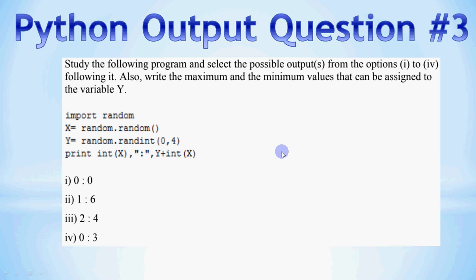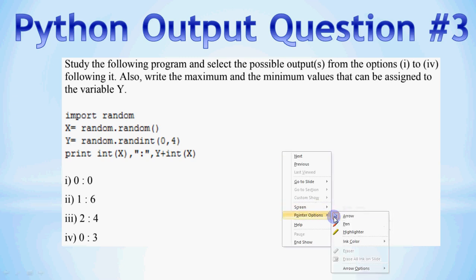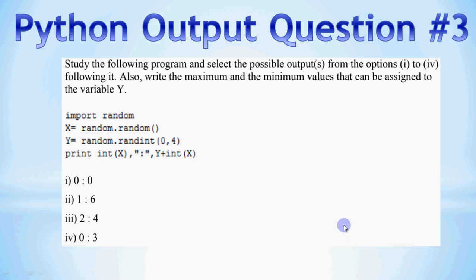Hi everyone, this is Anjali and in this video we'll be doing Python output question number 3. This series discusses Python output questions, and this question is based on random numbers — how we generate random numbers in Python and how we use them.